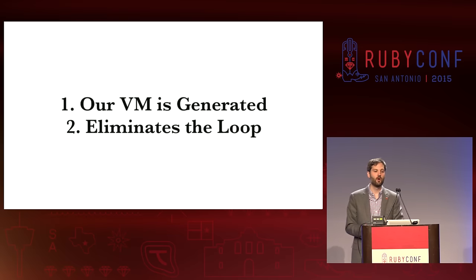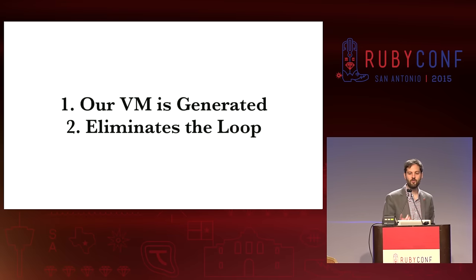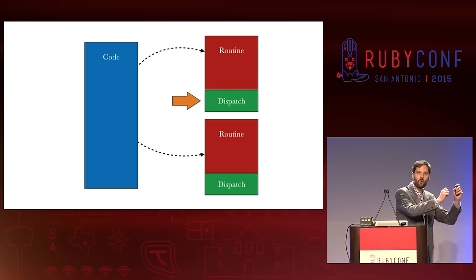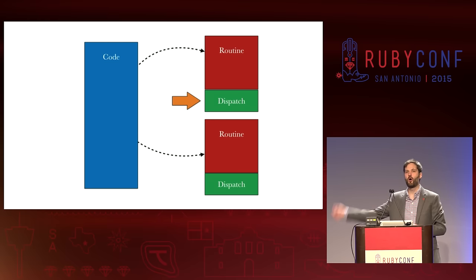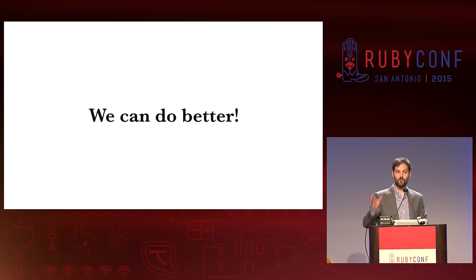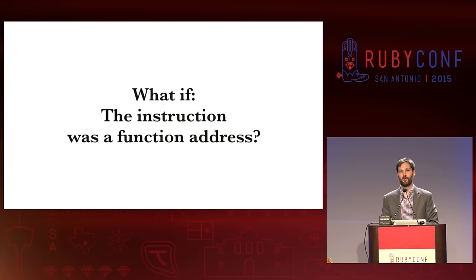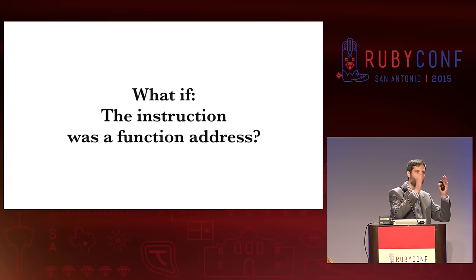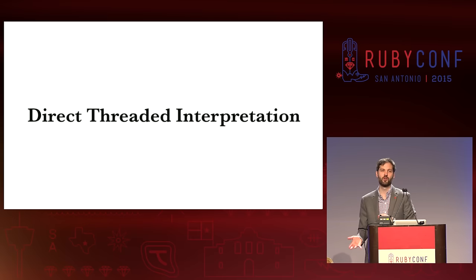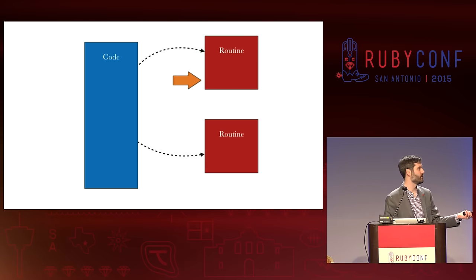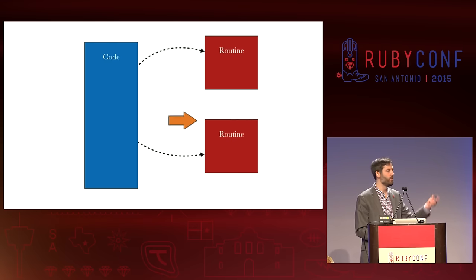The important thing to take away is that our VM is actually generated, and that eliminates the loops. We can even do better than this. Remember, we're doing that lookup from a hash table — we have to say put_string, where does that go? We go look that up and then call that function. What if the instruction was actually the address of the function we wanted to call? Now instead of going and doing that hash lookup, we have the pointer, we know where that function is, let's directly jump there. This is called direct threaded interpretation, and this is what Ruby's VM does. We eliminate that dispatch code and can jump directly from the end of one instruction to the next.